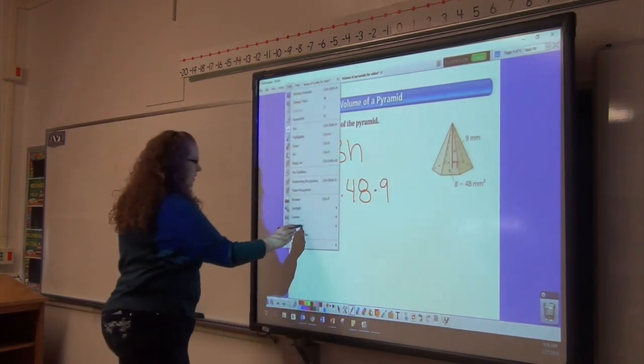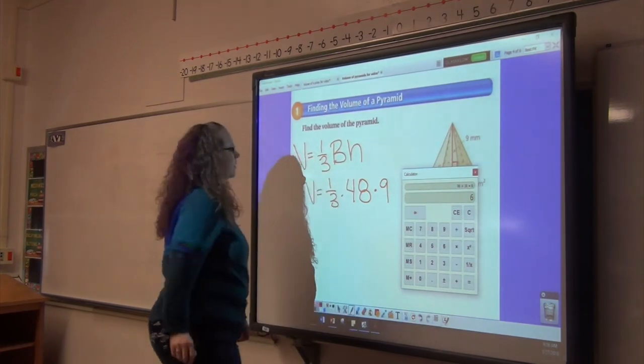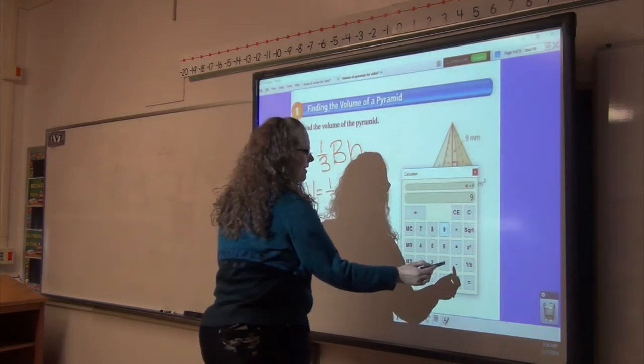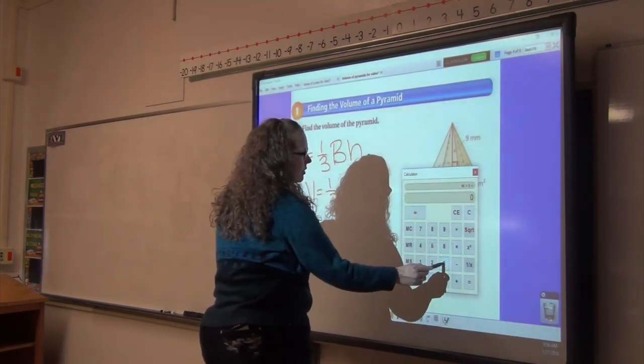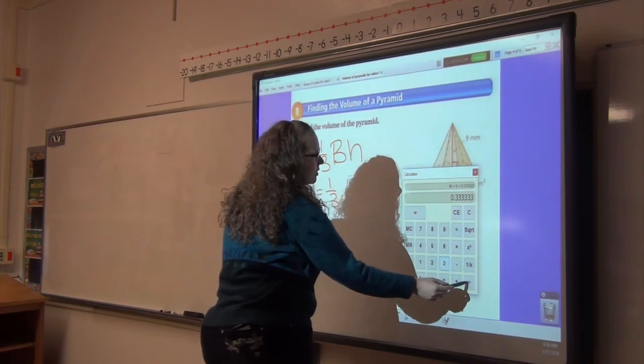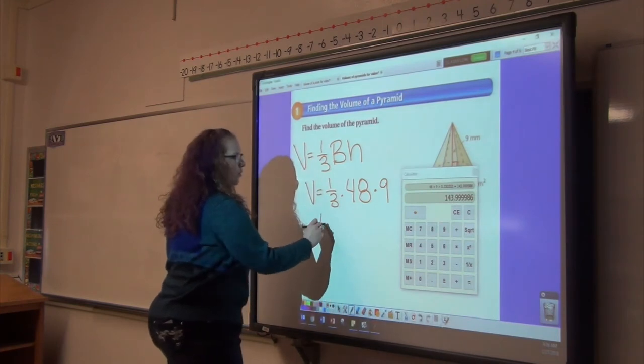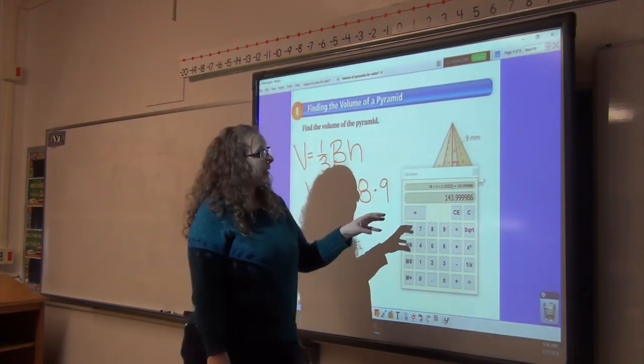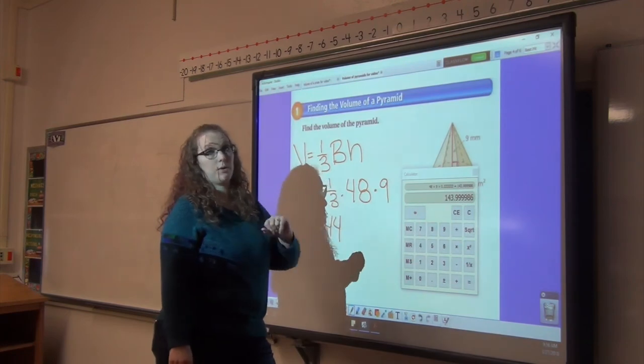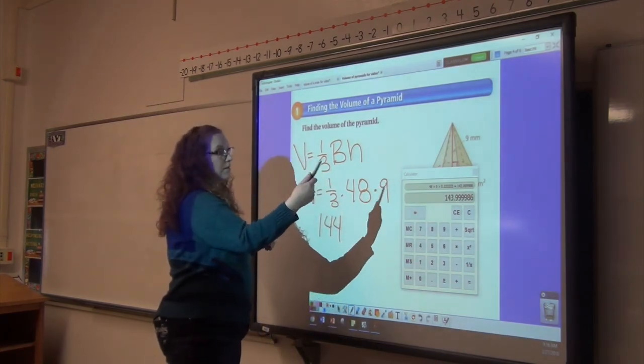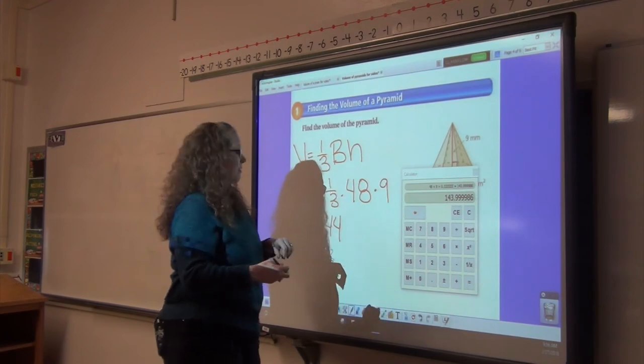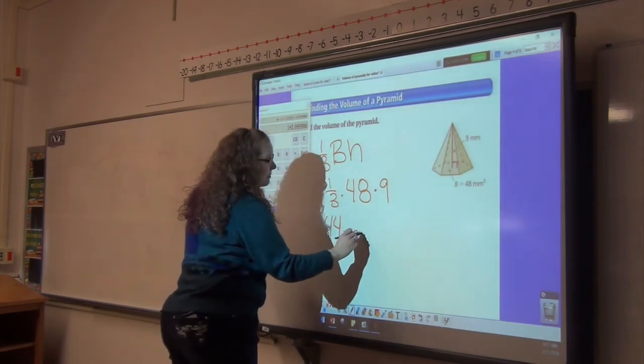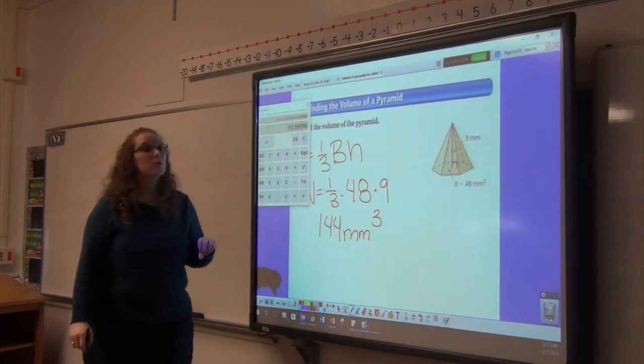So we're going to pull out our calculator here. 48 times 9 times one third equals 144. It says 143.999986, but I actually changed one third to 0.33333 and probably didn't put enough threes in there because it rounded down. If I had put more threes in there, it would have come up with 144 for the volume of this pyramid. And it is millimeters cubed. It is volume, so it is always cubed.